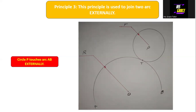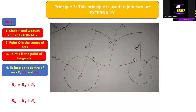Now let's look at the next diagram, which we need to really pay attention to. We have circle P and circle Q, and they are touching arc TT externally — they are positioned on the external part of arc TT. Point O is the center of the arc, and point T is the point of tangency.